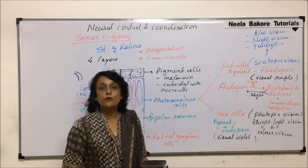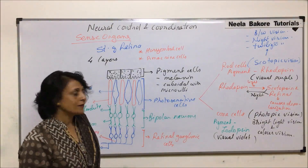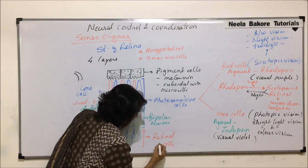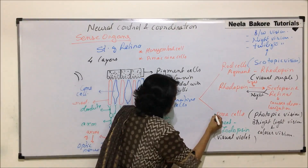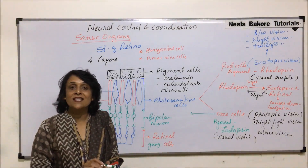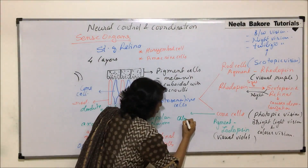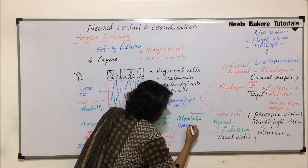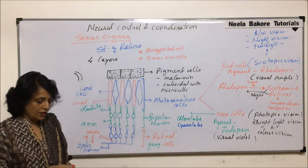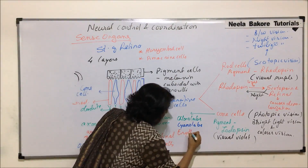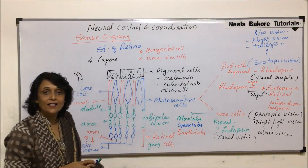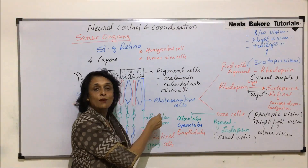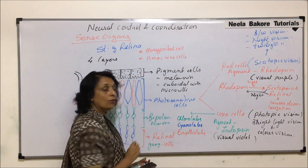Cone cells are responsible for color vision and there are three types of cone cells. The cells sensitive to green are known as chlorolabs, the ones sensitive to blue are called cyanolabs, and the ones sensitive to red are called erythrolabs. These specific names help remember which wavelength stimulates them. Human eyes are most sensitive to green.